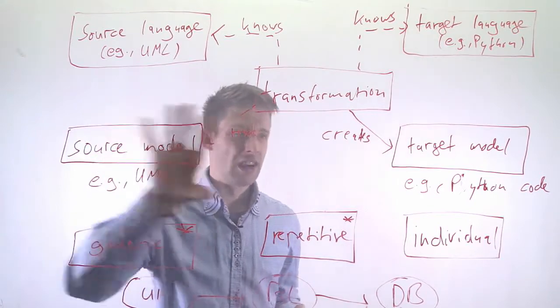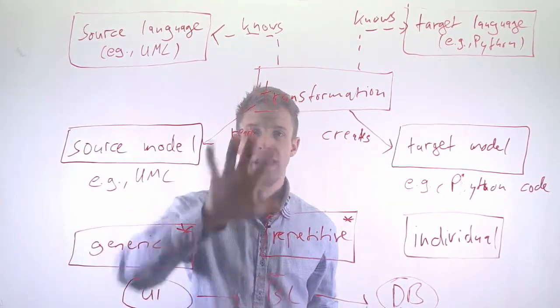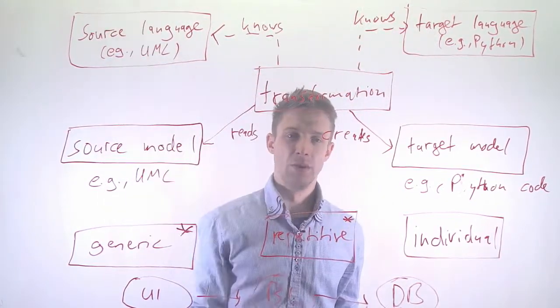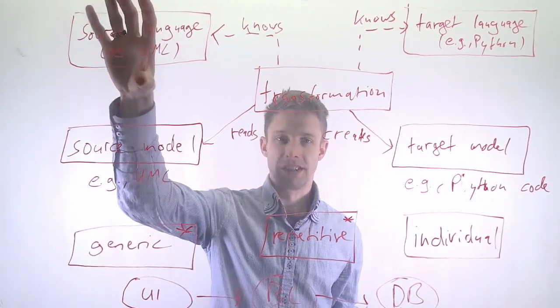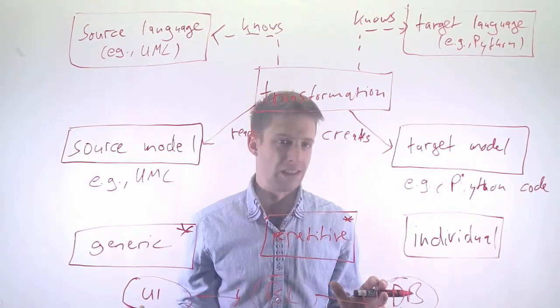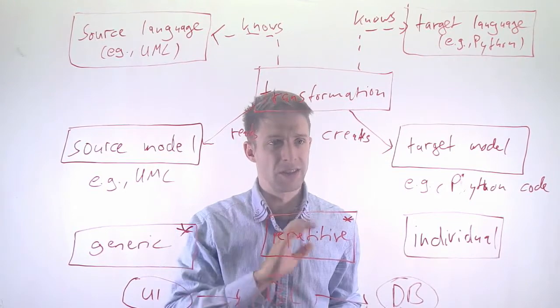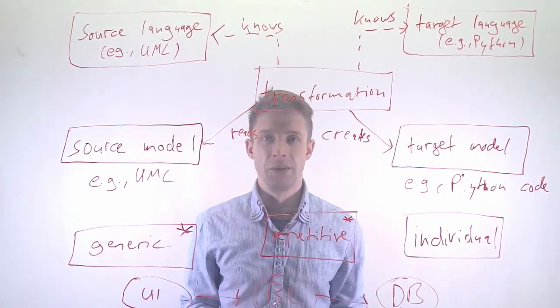But as I said before, you need to have these models. You need to have a source model. You need to know what you transform it into. And for that, you need your transformation that basically understands the two models. So if you want to generate a UI, you have to have some kind of source model, for example, a UML model. And you need to know the target language like HTML or JavaScript or anything like that. Okay, let's go into some more details with this example and then we wrap up.